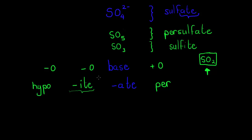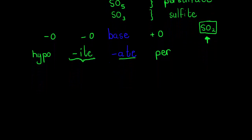This is the convention for how I would name all of the others. The base gets "-ate". If I subtract one oxygen it changes to "-ite". If I add one oxygen I add the prefix "per-" — so "per-something-ate". And if I subtract another one from the "-ite", then I add the prefix "hypo-". If I subtract yet another one, it would either be a molecule itself or already just the element itself.